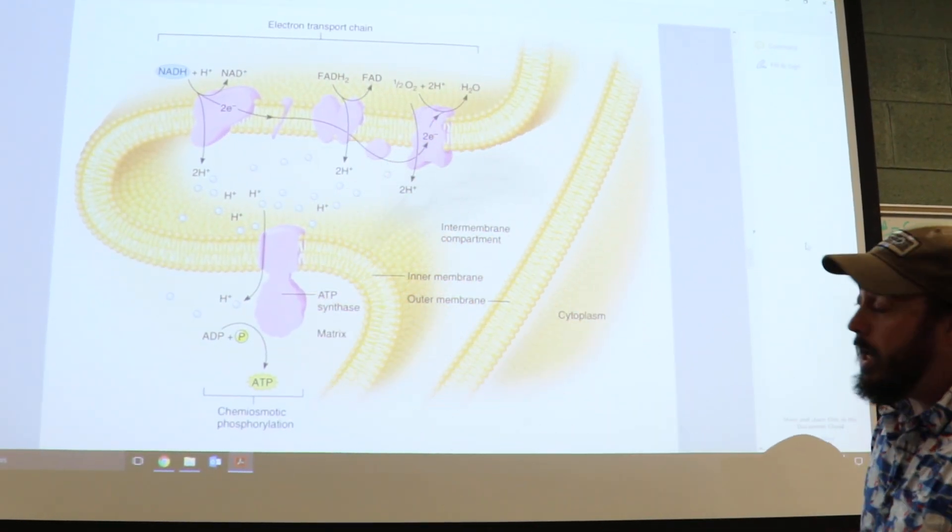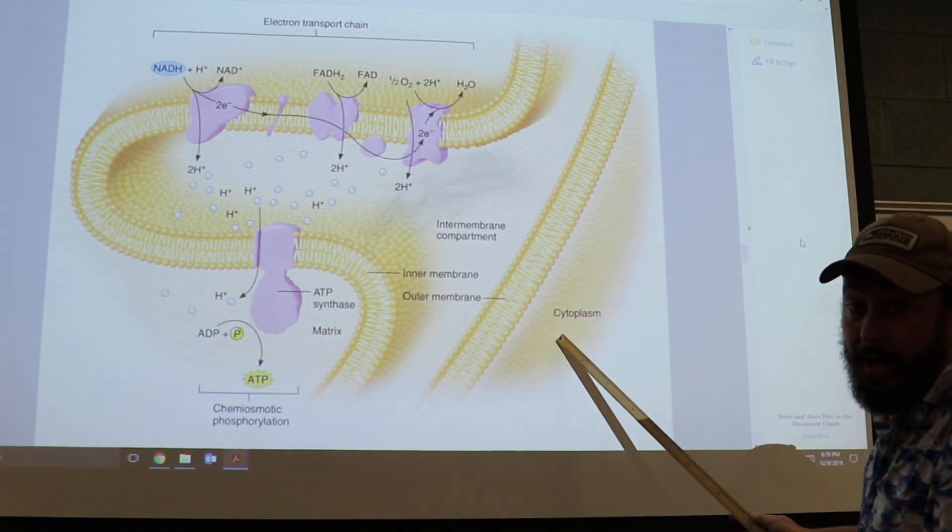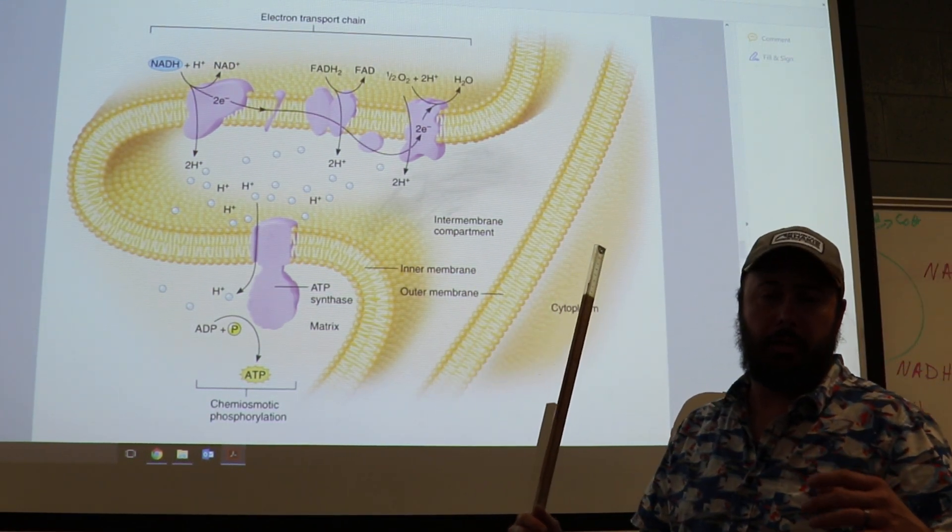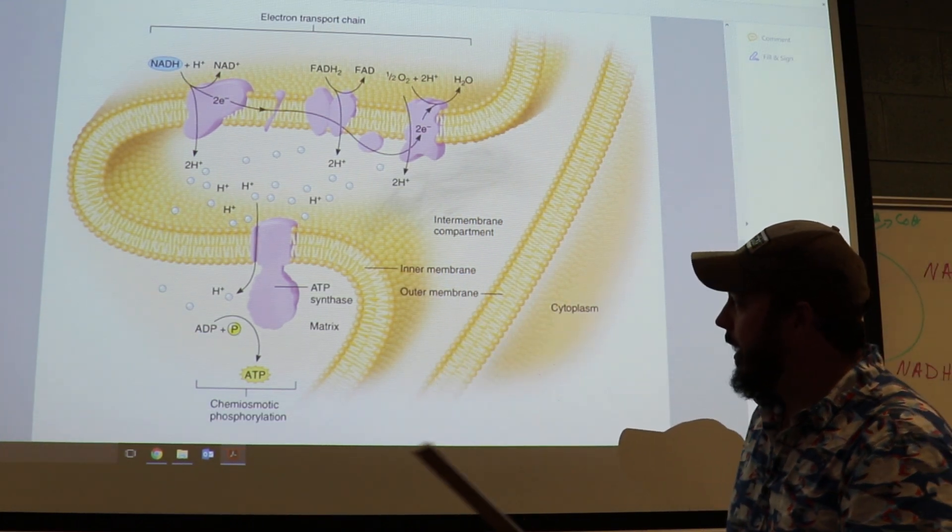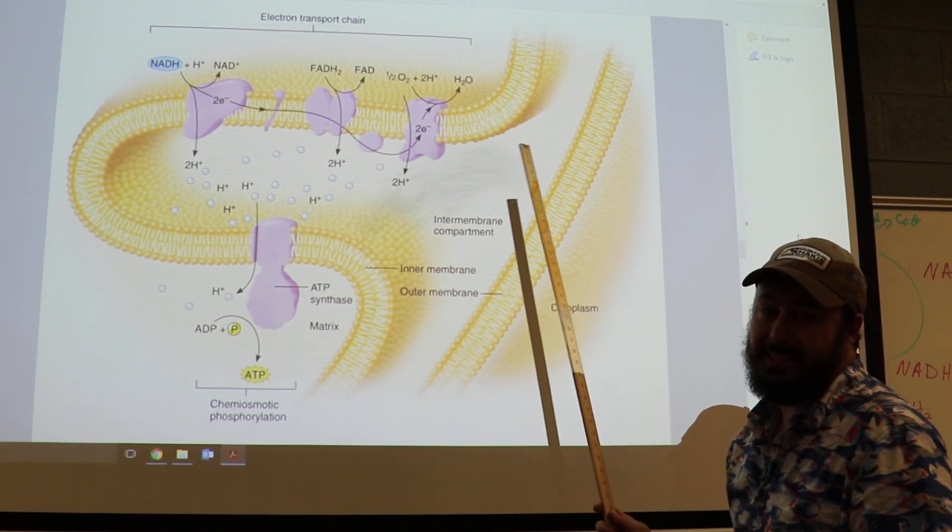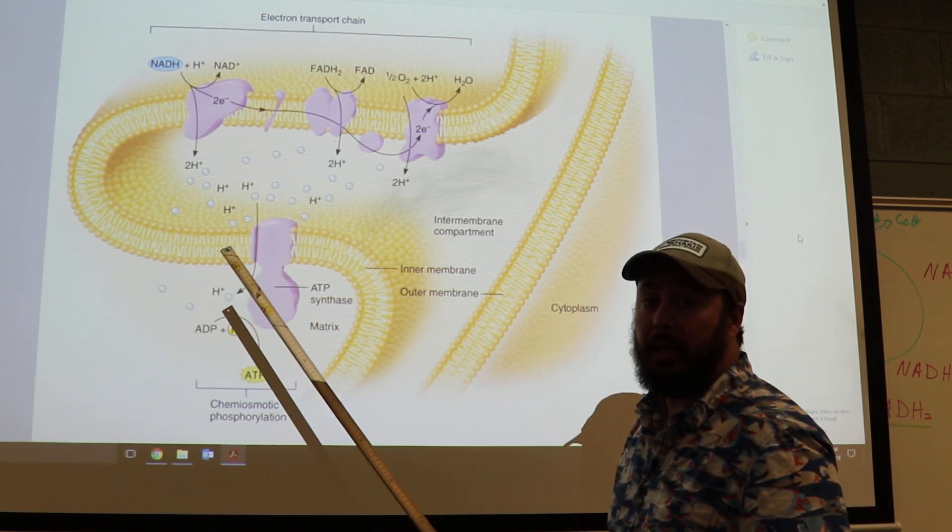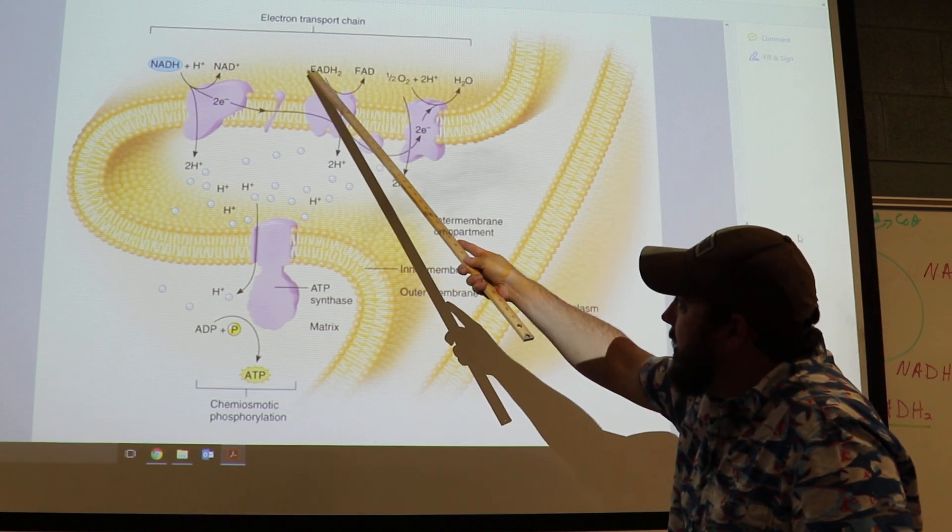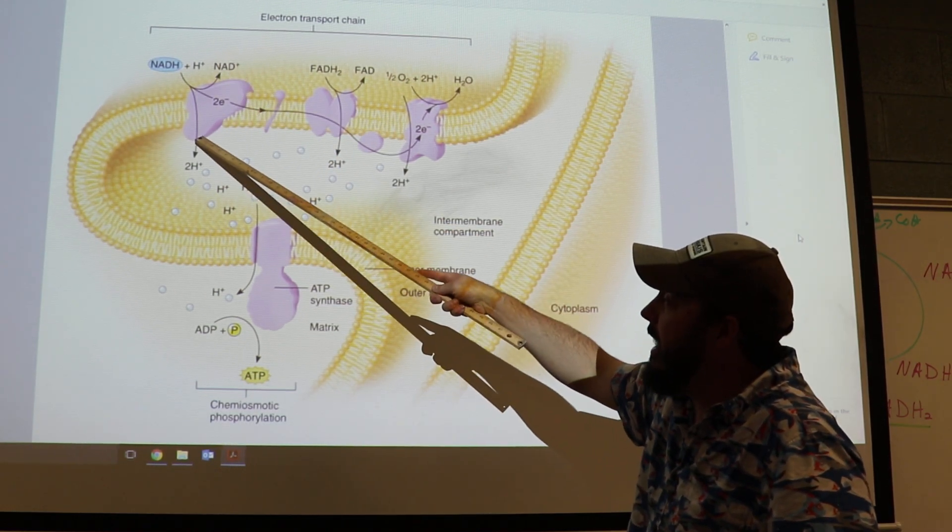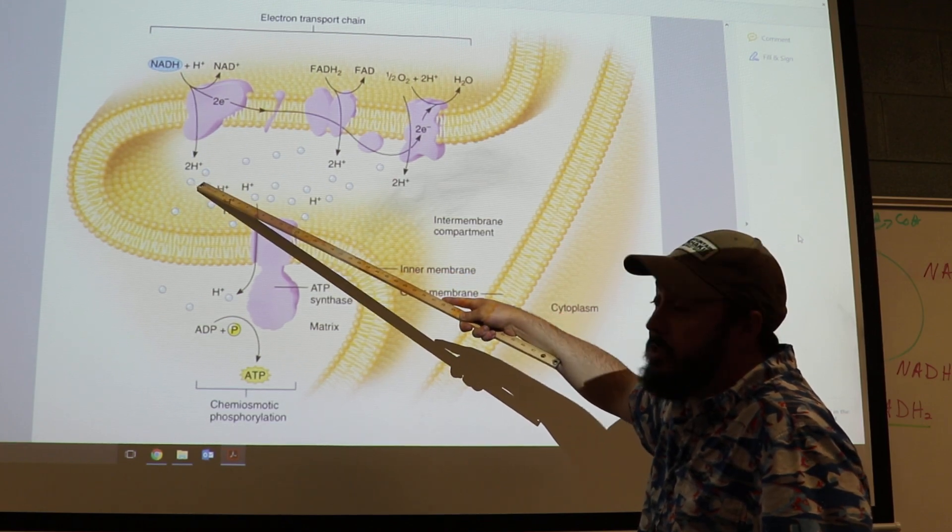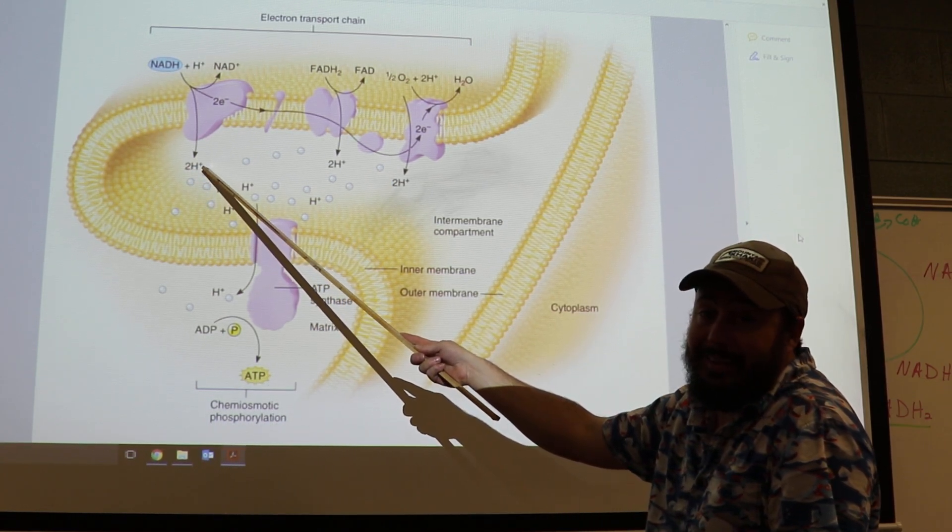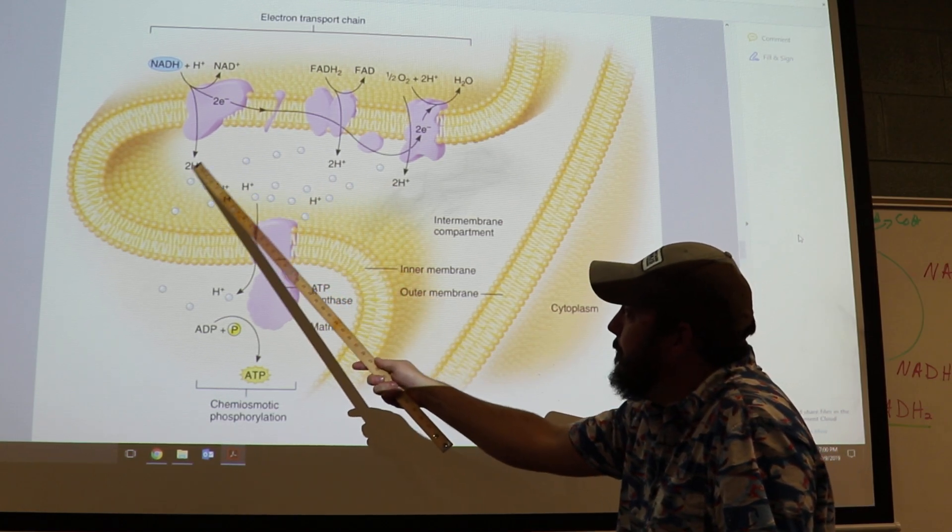As you see here, this is inside the mitochondria. This is the cytoplasm outside. This is the outer membrane and the inner membrane of a mitochondria. Remember, mitochondria are double folded. You have an outside folding and inside folding as well. We're focused on the inner membrane. We have the electron transport chain occurring here. That's a set of proteins that strip electrons off of NADH and FADH2. NADH comes in here. The electrons are stripped off, leaving you with NAD+. The hydrogens then enter this intramembrane compartment.